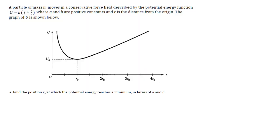This is an AP Physics Mechanics question on conservative forces and potential energy. Part A: find the position r at which the potential energy reaches a minimum in terms of a and b. To approach this, we look at the potential energy versus position graph.